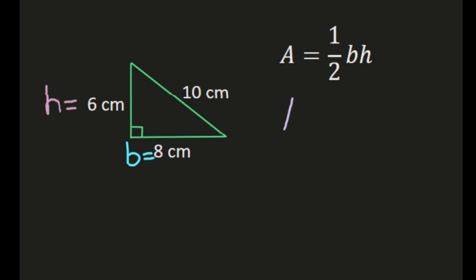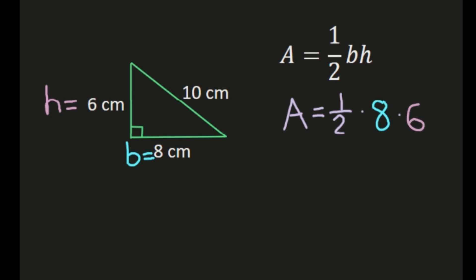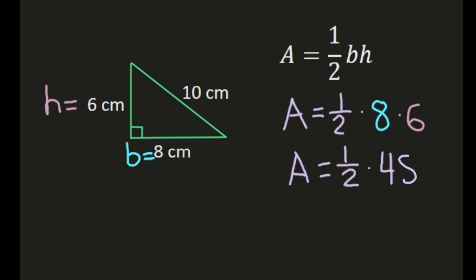We're ready to plug in values. Area equals one-half times the base — our base was 8 centimeters, so we substitute 8 for B — times our height. Our height was 6 centimeters, so we substitute 6 for H. Now I have one-half times 8 times 6. We'll multiply 8 by 6 first to get 48, then one-half times 48 is the same as 48 divided by 2, which is 24. Working with area, our answer is 24 square centimeters.